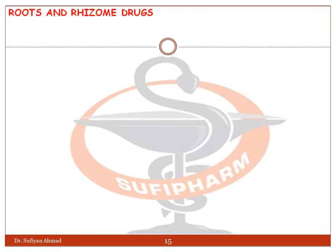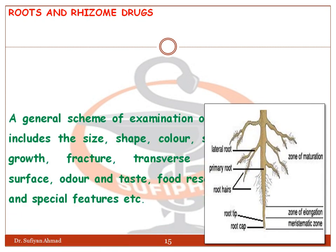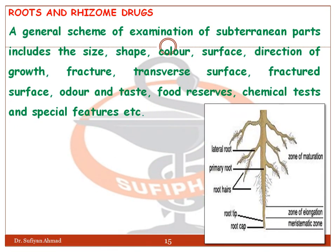Root and rhizome drug: a general scheme of examination of subterranean parts includes size, shape, color, surface, direction of growth, fracture, transverse surface, fractured surface, odor and taste, food reserve, chemical taste, and special features.